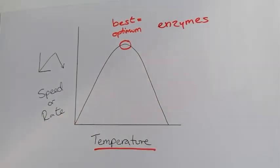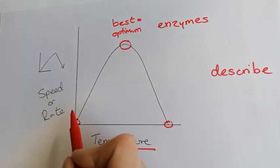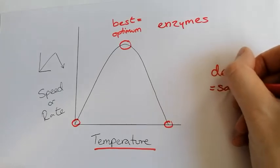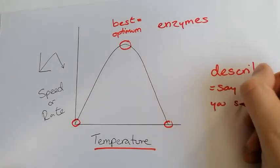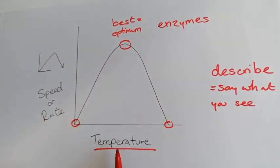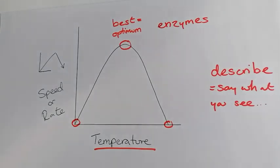Now we need to get to what is going on and why. If you are asked to describe this graph, that means say what you see. You would quote the three circled points — the start values, the optimum values, and where it falls back down. It doesn't matter for a describe question why it has happened — literally say what you see on the graph. If you are asked to explain it, however, you're going to need to understand what's going on in terms of enzymes.